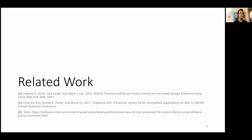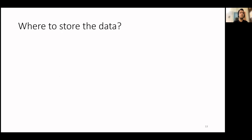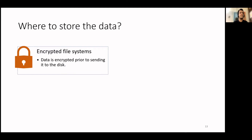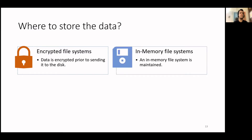We will now discuss some of the prior work in this area. Primarily, there are three designs for a secure file system. The first one is an encrypted file system using the untrusted host file system. Here, the data to be stored on the file system is first encrypted. This approach guarantees confidentiality. However, it incurs significant performance overhead due to an encryption operation every time we write data and a decryption operation every time we read data.